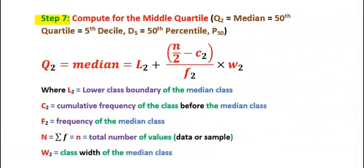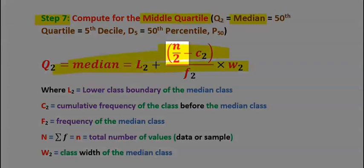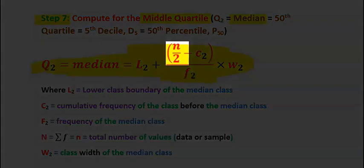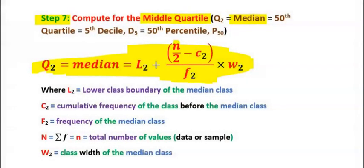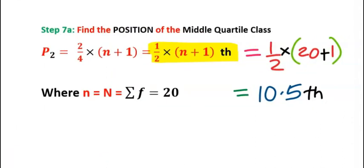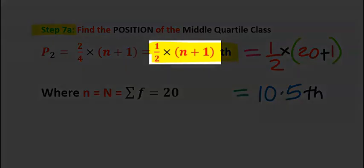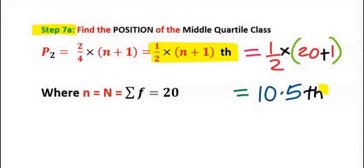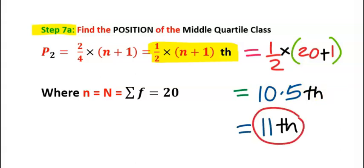Step 7: compute for the middle quartile, which is the same as the median, using this formula. Instead of N over 4 like in the lower quartile, we now use N over 2. Step 7A: to find the middle quartile class, substitute into the formula. It is on the 10.5th position; however, we round it off to 11, which is the nearest whole number.